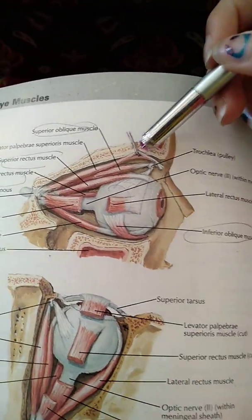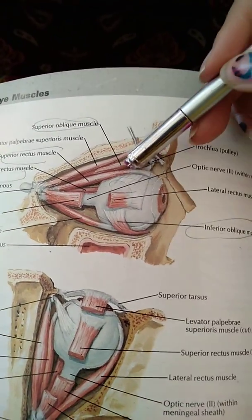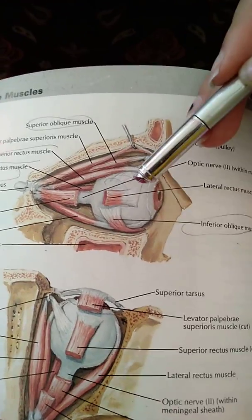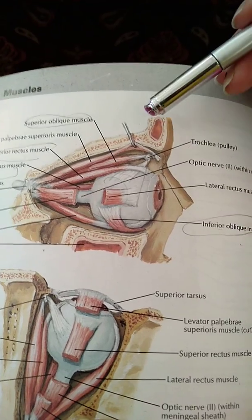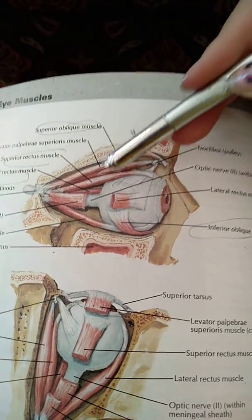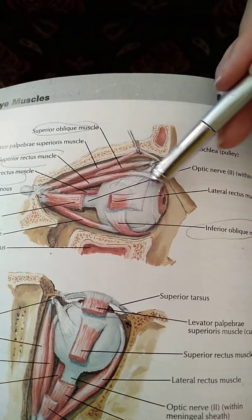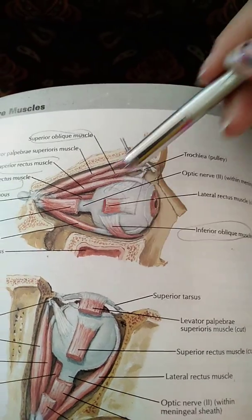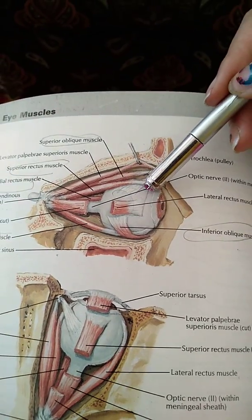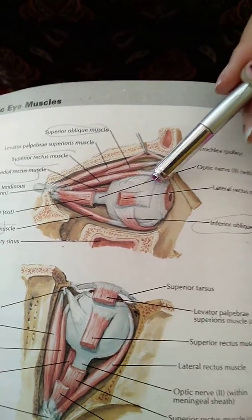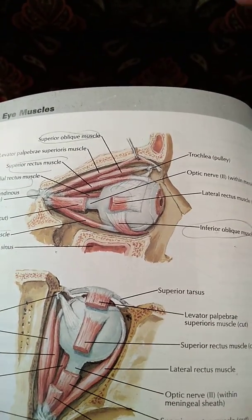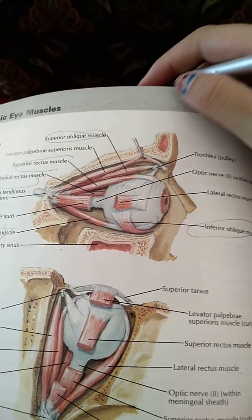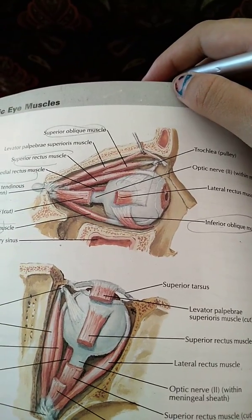We are going to study about the muscles of the eyeball. The muscles of the eyeball are of two types. The ones that are present superficial or on the outside of the eye are called the extrinsic muscles of the eye, and the ones which are present a little deep or on the inner side are called the intrinsic muscles of the eye.